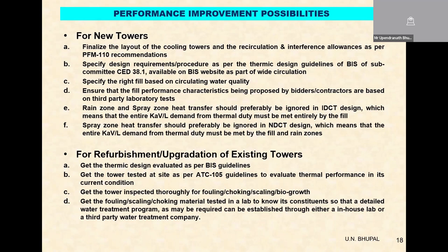When we come to existing cooling towers, there is a big problem. Based on certain publications of CEA during the past 10 years, they have identified about 30,000 MW of capacity for upgradation and modernization. But even without R&M measures, in their current situation cooling towers are not performing properly because most CTI third-party tests have given results in the range of 65 to 70% thermal capability.